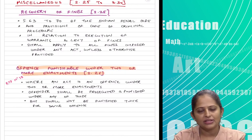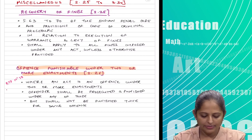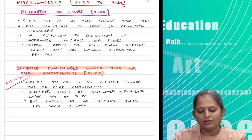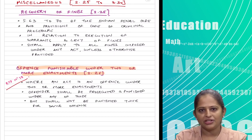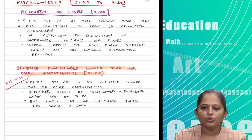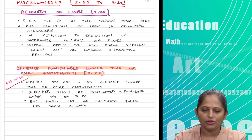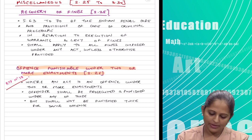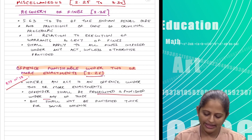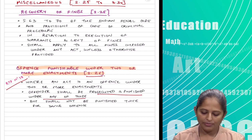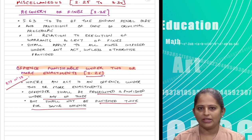The miscellaneous provisions are covered in sections 25 to 30. This has been asked in RTP. When an act or offence is punishable under two acts, you will not be punished under both. Section 26 states that you will be prosecuted and punished under any one of those acts but not punished twice for the same offence.